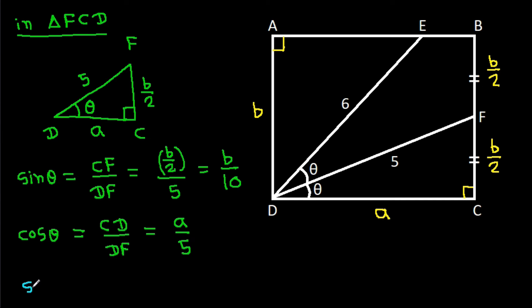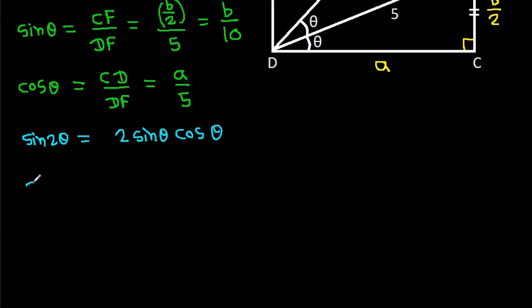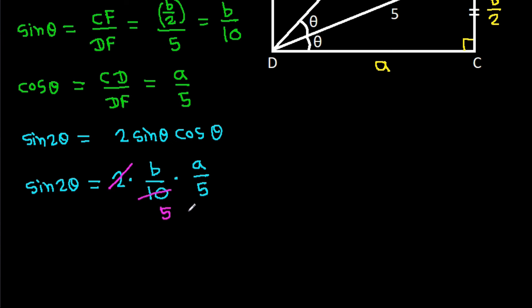We know that sin 2θ equals 2 sin θ cos θ. So sin 2θ equals 2 times (B/10) times (A/5), and 2 times 5 is 10, so sin 2θ equals AB over 25.